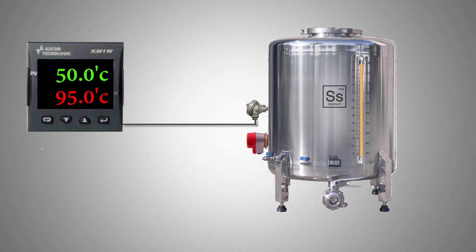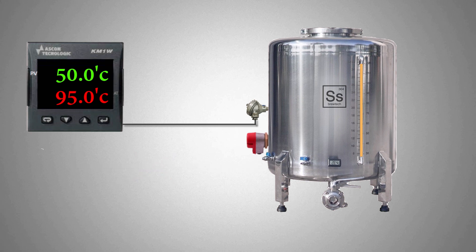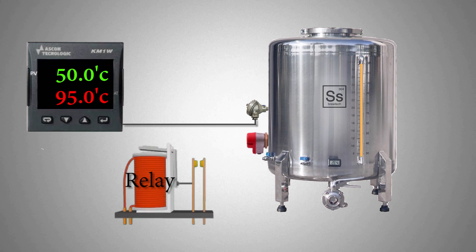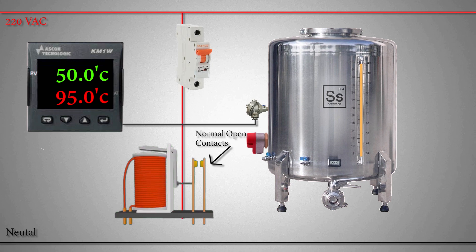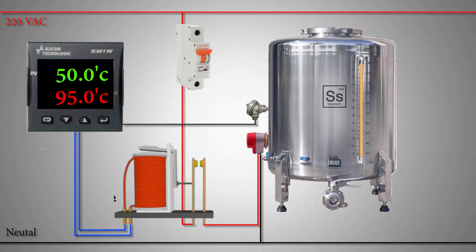We cannot connect the heater directly to the temperature controller. To turn on and off the heater, we need some switching device. We can use a relay or a contactor to switch the heater on and off. The relay's normally open contacts can be used to switch on and off the heater. The relay's normally open contact will be connected in series with the heater and voltage source, and the relay coil will be connected to the temperature controller. Now the temperature controller can turn on the relay, and the relay contacts close to apply voltage to the heater.